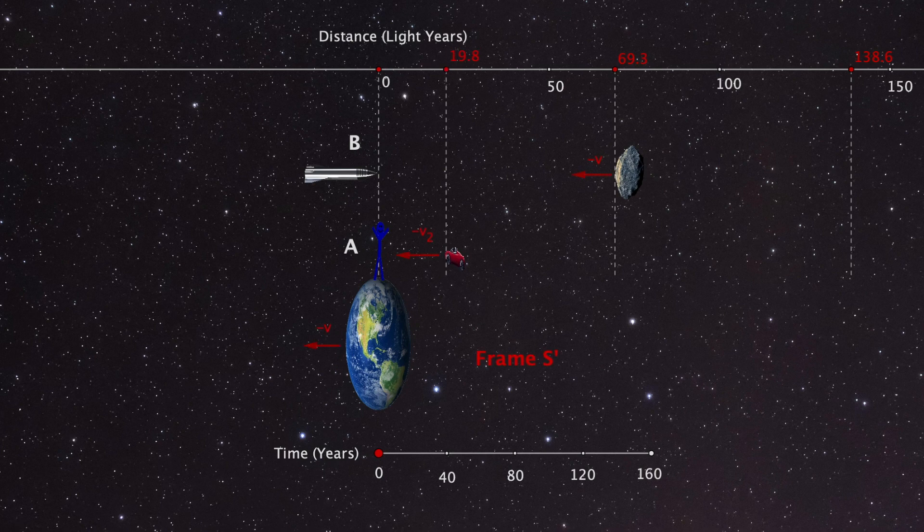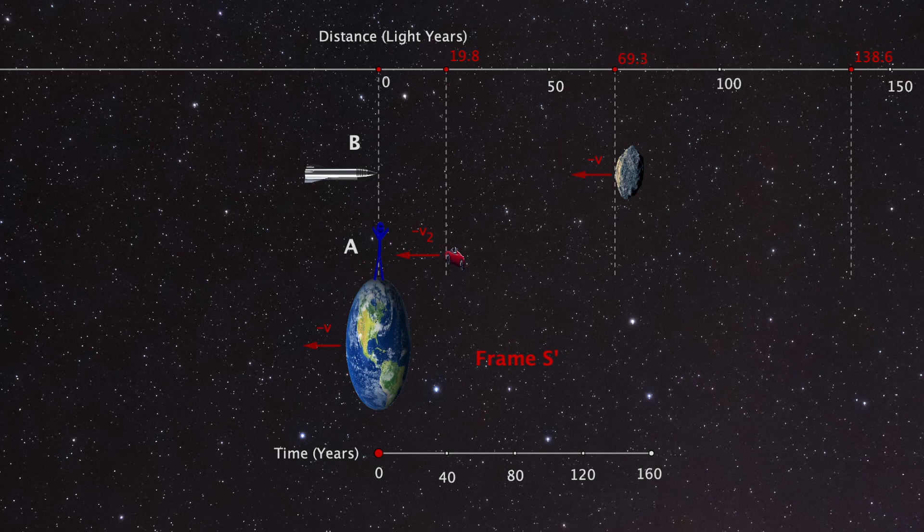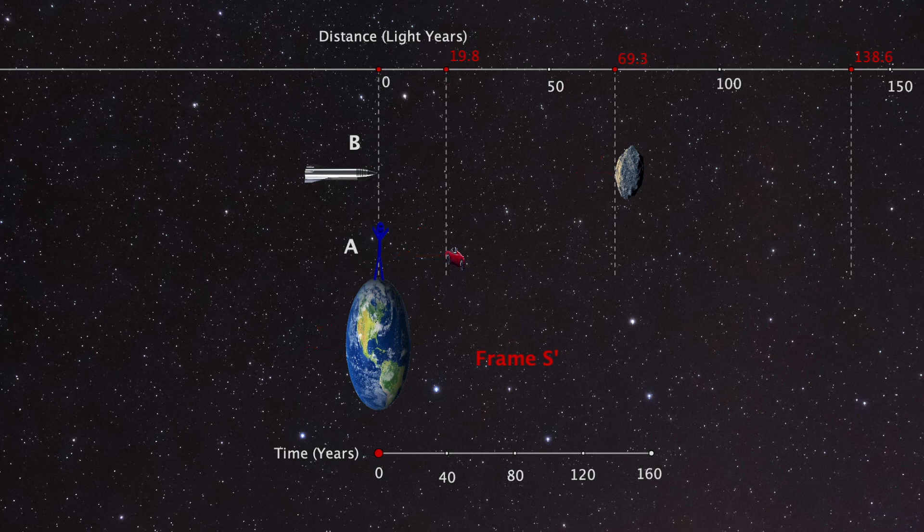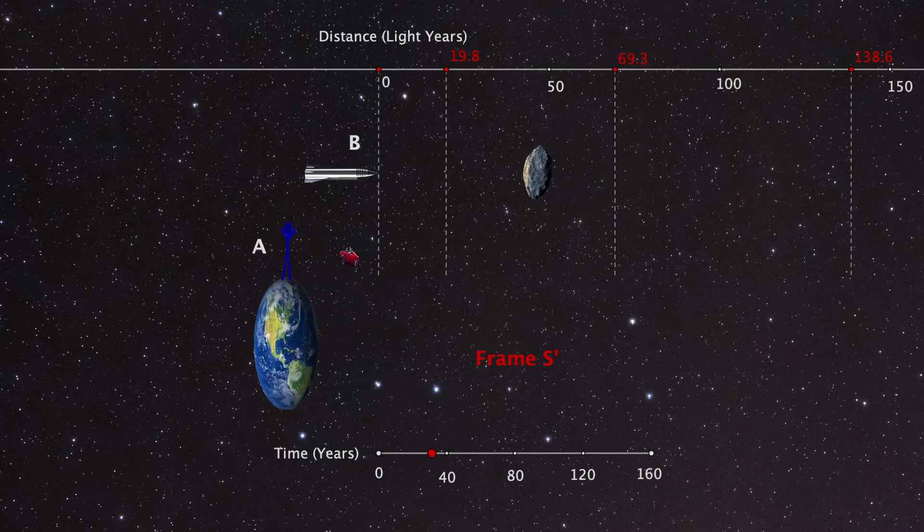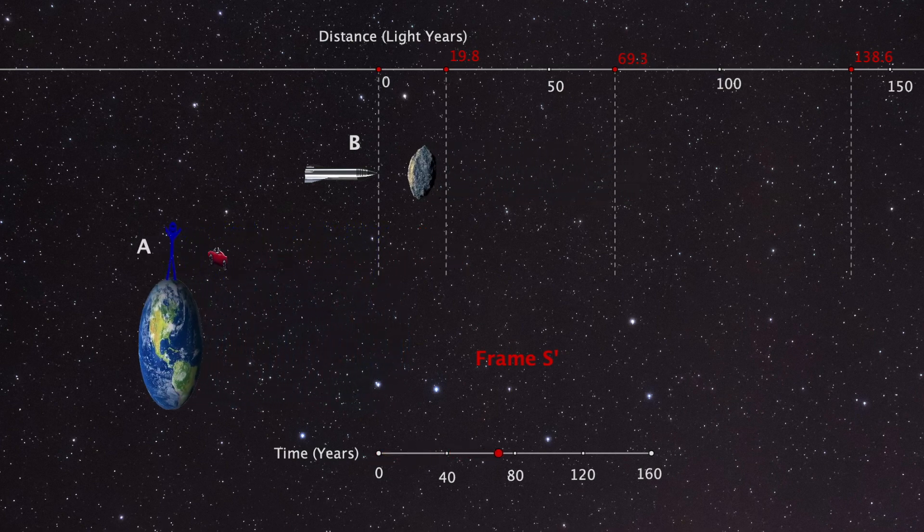Now, the first thing to notice is that there is only half the distance from Earth to the asteroid. If we first focus on this part of the simulation, we will see that the asteroid moves towards Earth with minus V. Since it only has to cover half of the distance, it is quite easy to see that Observer B will die after 80 years.